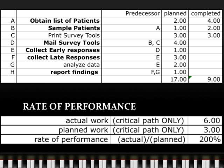The first example is listed here. The planned values have been recorded and the time needed to complete the first three tasks are also listed. The manager wants to know if the project will be completed on time. Rate of performance is the first step. To calculate the rate of performance, we need two values: the actual work time and the planned work time.